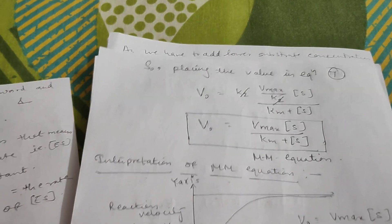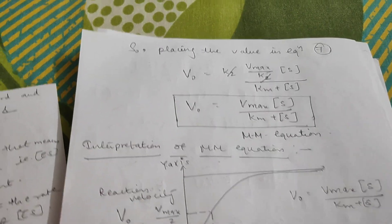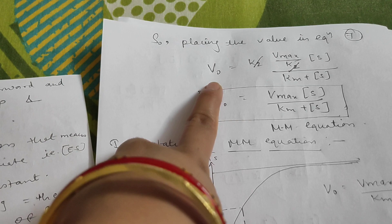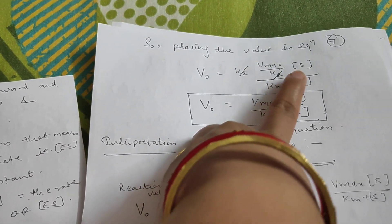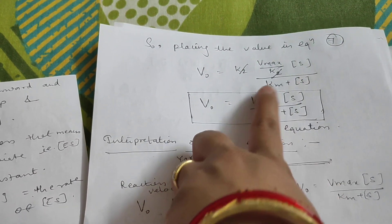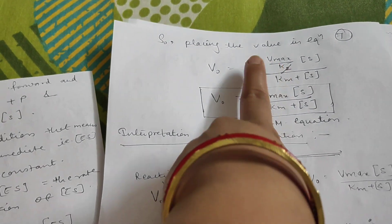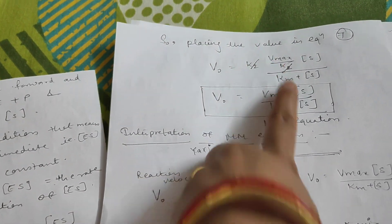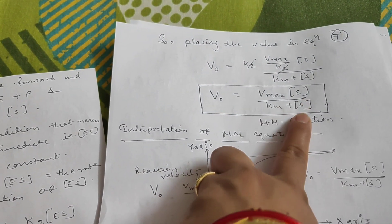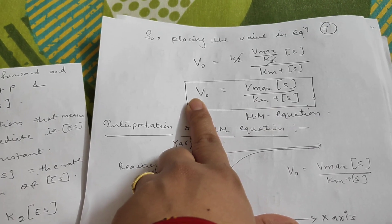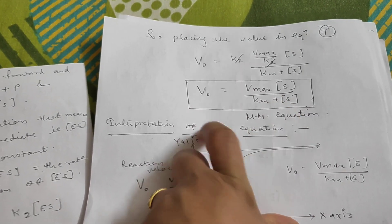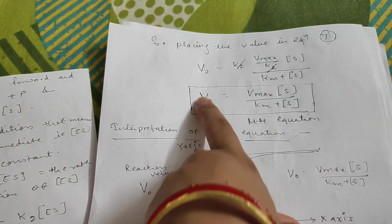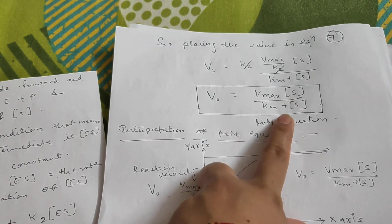Placing the value from Equation 7 into the expression: V0 = K2·[ET·S / (Km + S)]. Substituting ET = Vmax / K2, we get V0 = K2·(Vmax / K2)·S / (Km + S). The K2 terms cancel, giving us V0 = Vmax·S / (Km + S). This is the derivation of the Michaelis-Menten equation.